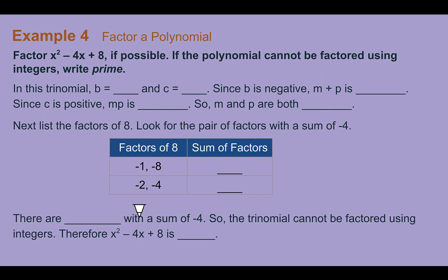Example 4: Factor x squared minus 4x plus 8 if possible. If it cannot be factored using integers, write prime. We need to multiply to c and add to b: b is negative 4, c is 8. Both factors must be negative since c is positive and b is negative. Factor pairs of 8 that are both negative: negative 1 and negative 8 add to negative 9; negative 2 and negative 4 add to negative 6. There's no pair that adds to negative 4, so this polynomial is prime.